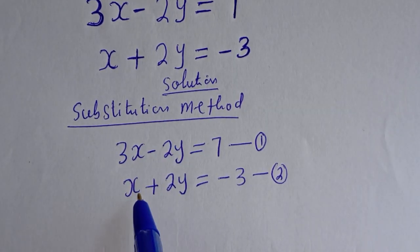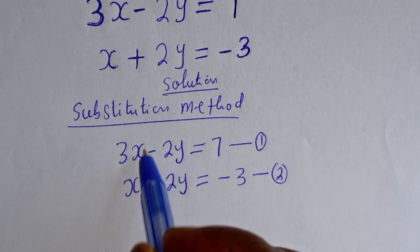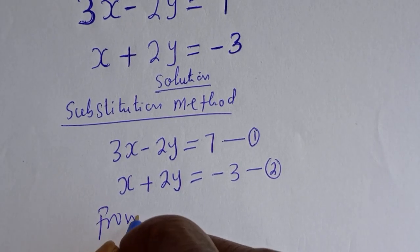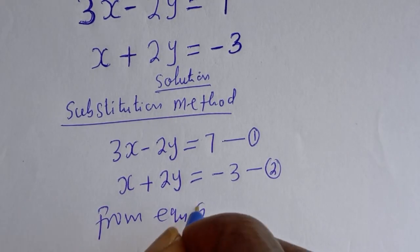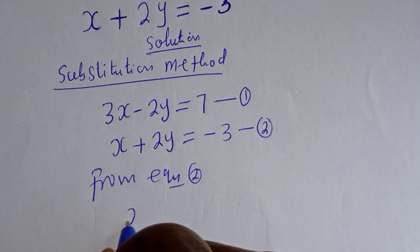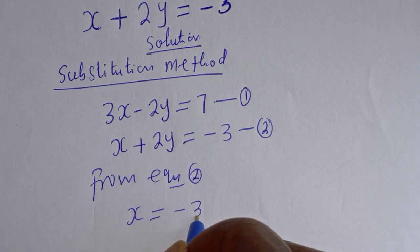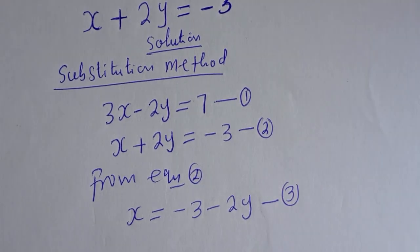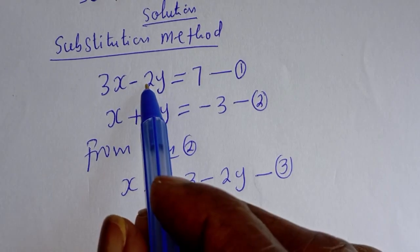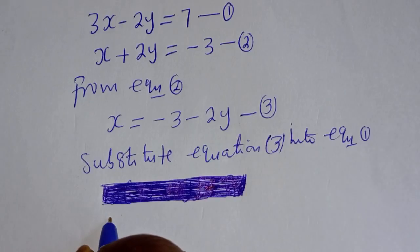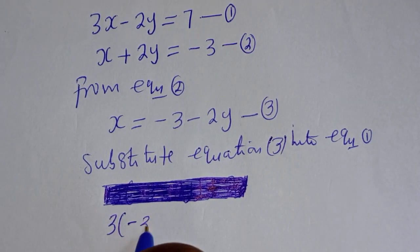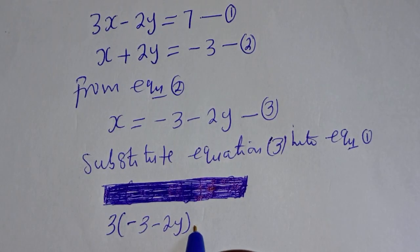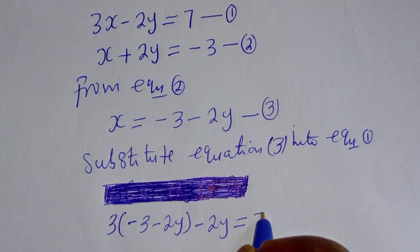Since we are using the substitution method, let's make x the subject of the formula from equation 2. From equation 2, x is equal to minus 3 minus 2y. Let's call this equation 3. Now let's substitute for x in equation 1: 3 bracket (minus 3 minus 2y) minus 2y is equal to 7.